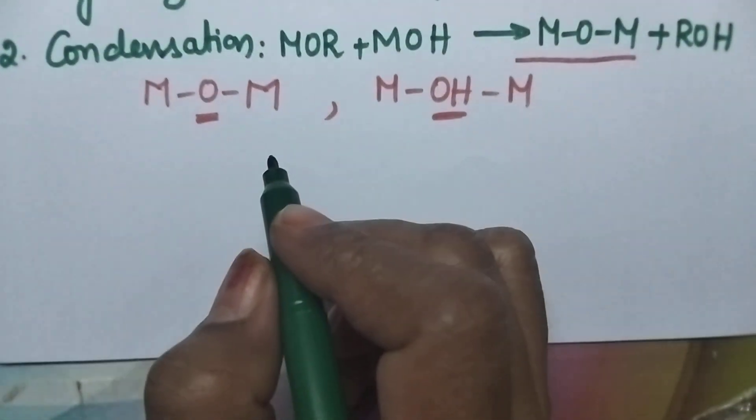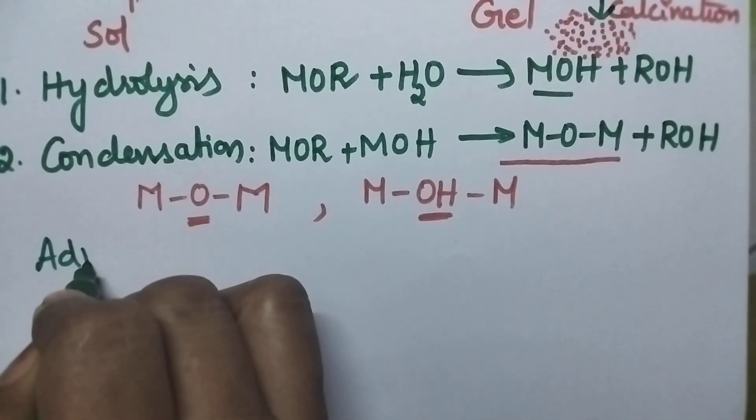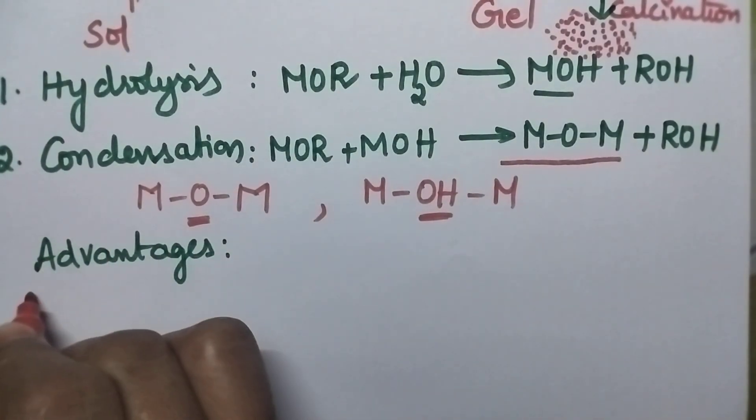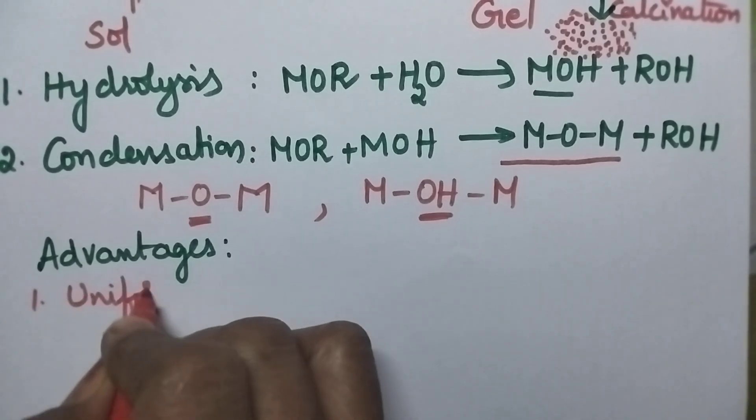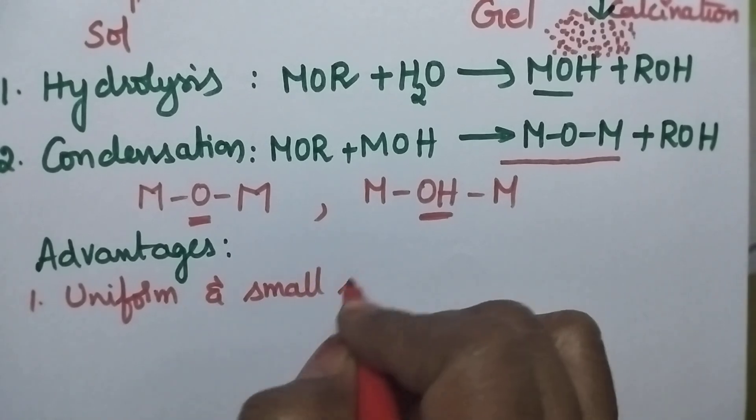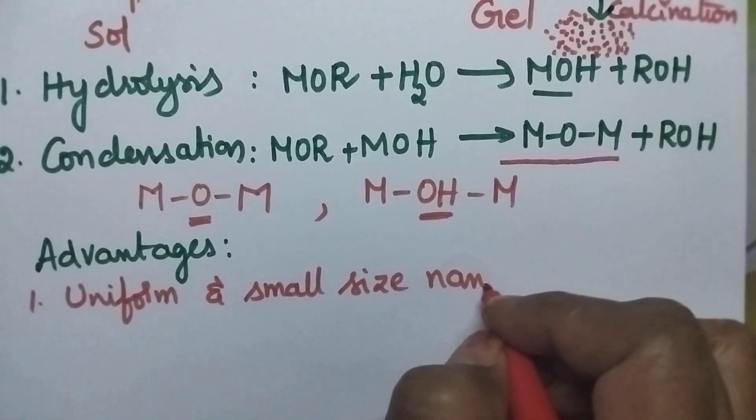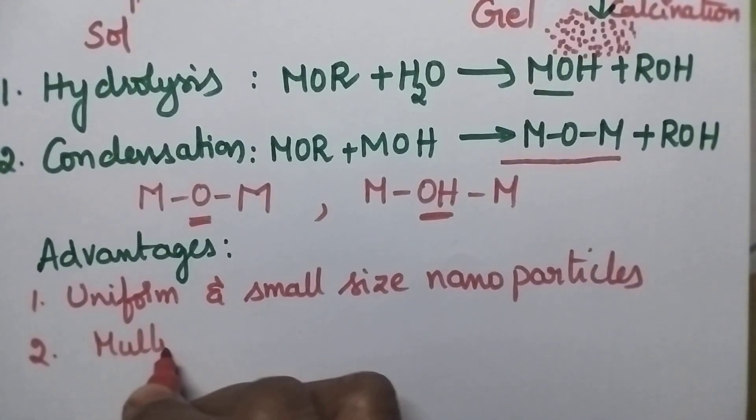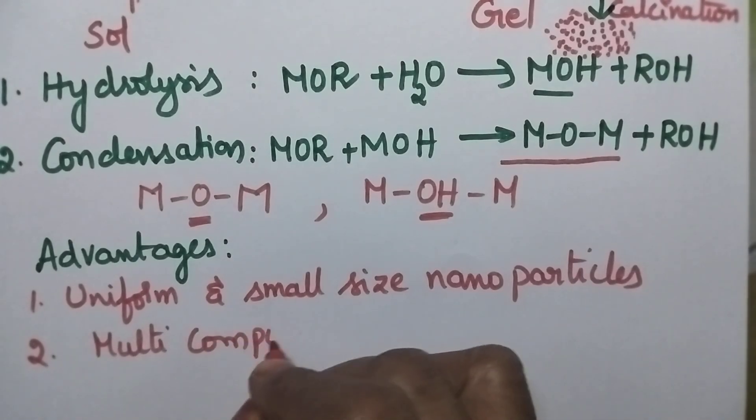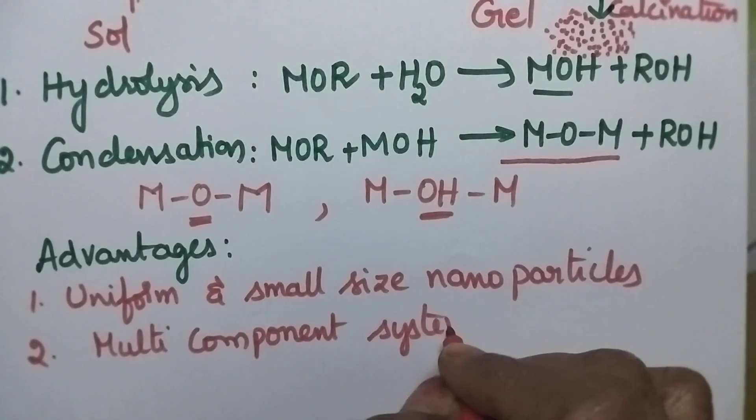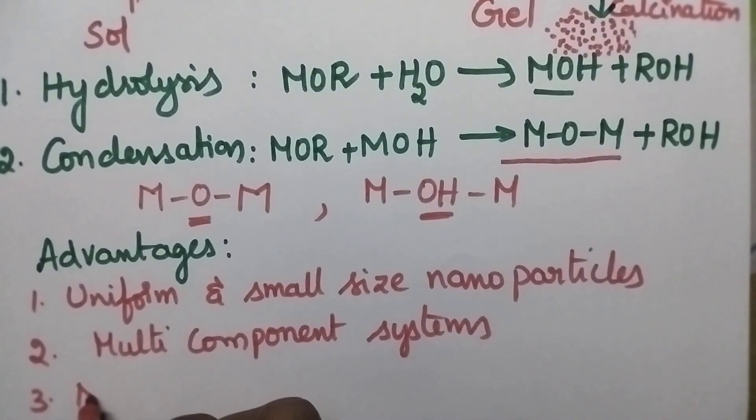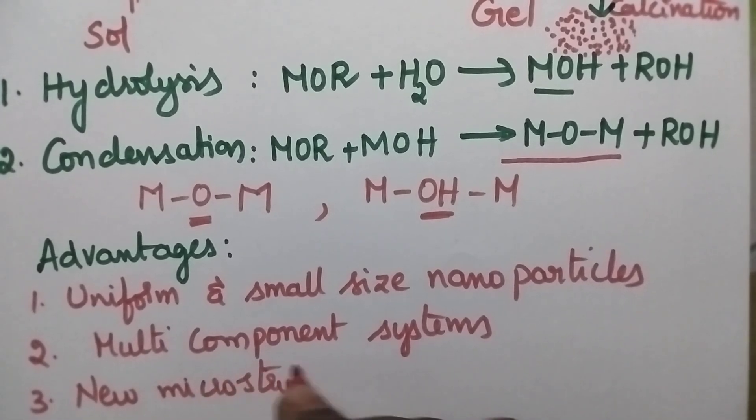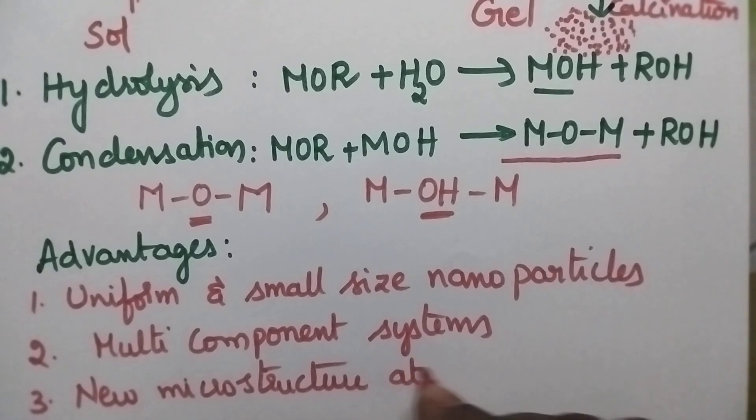Coming to the advantages of Sol Gel method. Through this Sol Gel method it is possible to obtain uniform and small size nanoparticles. Especially it is possible to get multi component systems. And it is also possible to get new microscope structures even at low temperatures.